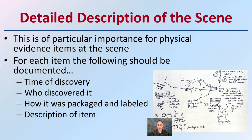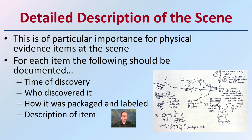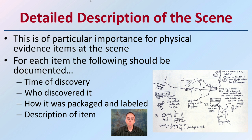Lastly, looking at the detailed description of the scene — this is of particular importance for physical evidence. For each item, the following should be documented: the time of discovery, who discovered it, how it was packaged and labeled, and a description of that item. These will likely need to be referred to as further investigations are conducted to better tell the story of what happened at the crime scene.